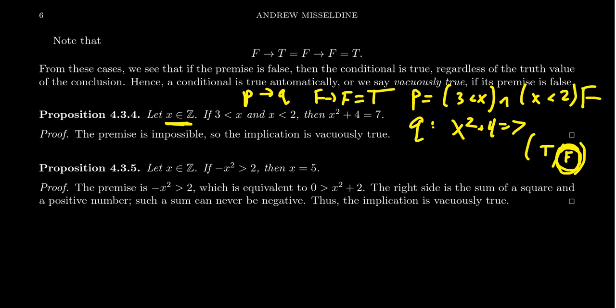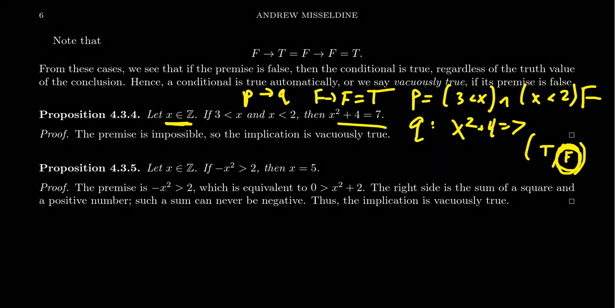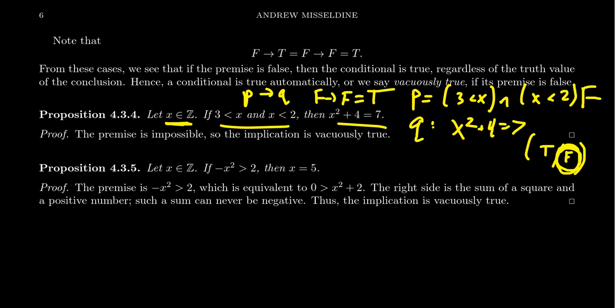In common English, this is like the idiom 'when pigs fly.' A parent might say you can go to the concert when pigs fly — they give you a hypothesis that's impossible, and then the conclusion follows. Their conditional is true. The implication is true even if both statements are impossible because the premise is false, making the whole conditional true.